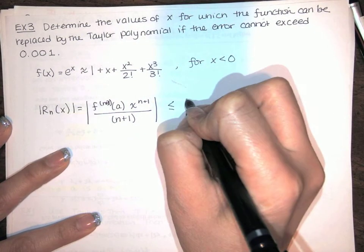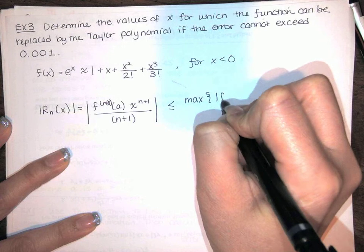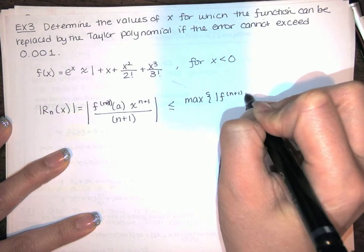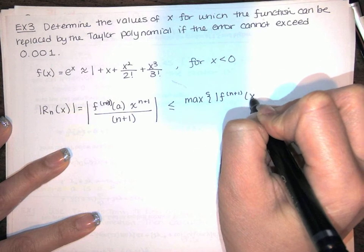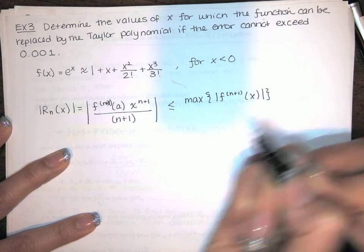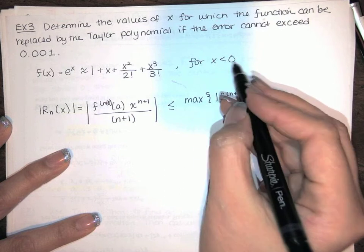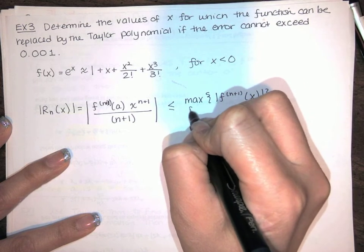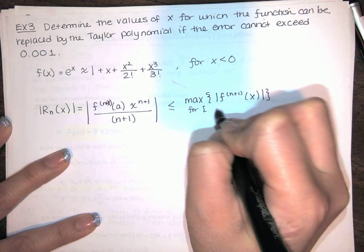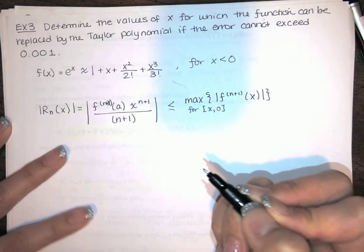And we know that that's less than or equal to the maximum value of the absolute value of the n plus 1 derivative of the function evaluated at x. For x between the center of the series and the x value where we're evaluating this, we're told that x is negative.